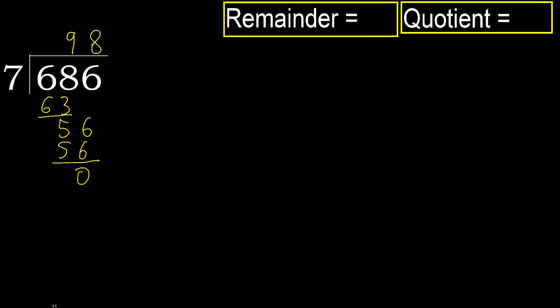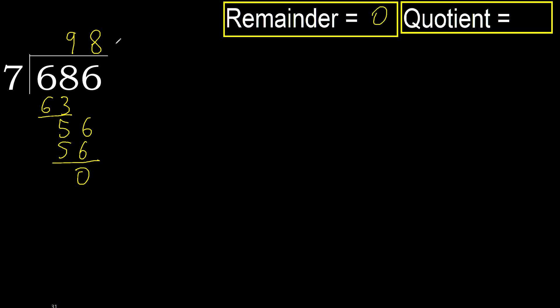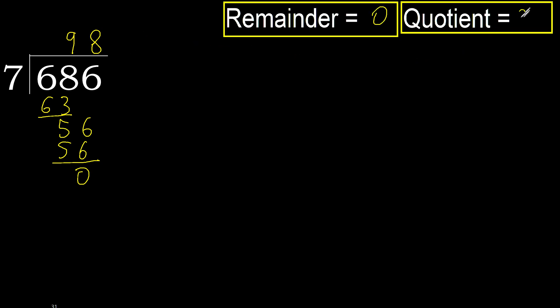There is no next number, therefore finish it. The remainder is 0, therefore 686 divided by 7 is 98.